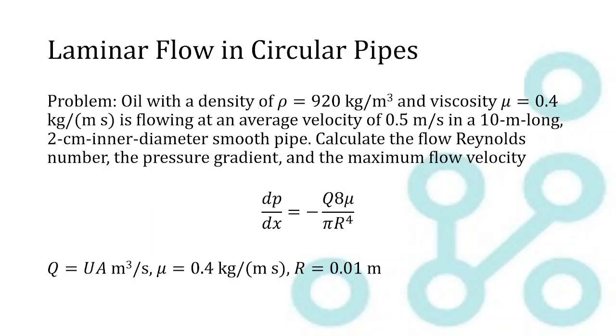But Q, which is our volumetric flow rate, we're going to have to calculate, right? So this is in cubic meters per second. And Q is always equal to the flow velocity times the cross-sectional area of our pipe. So we do know what U is, that's 0.5 meters per second.